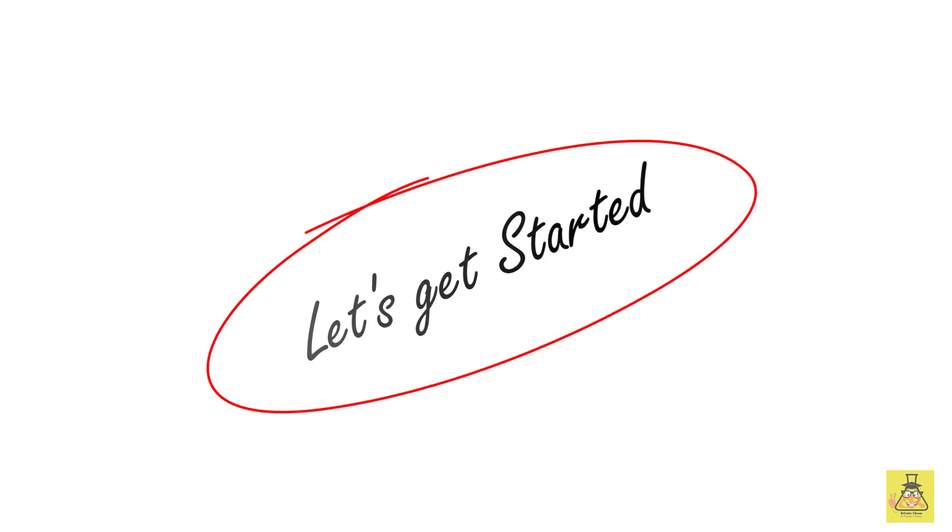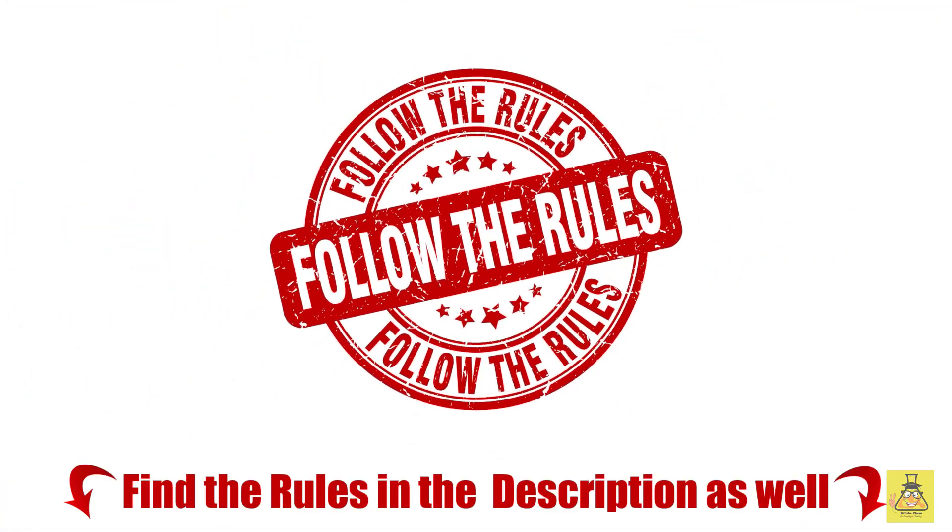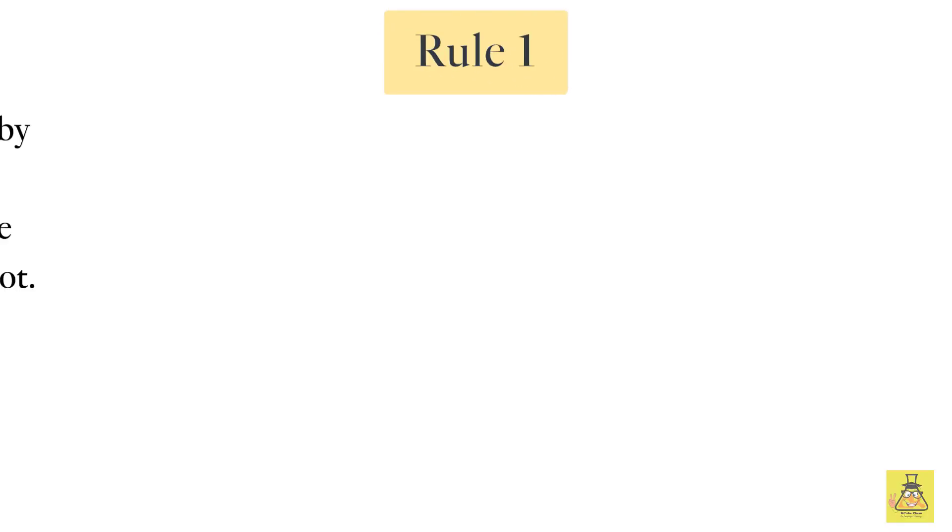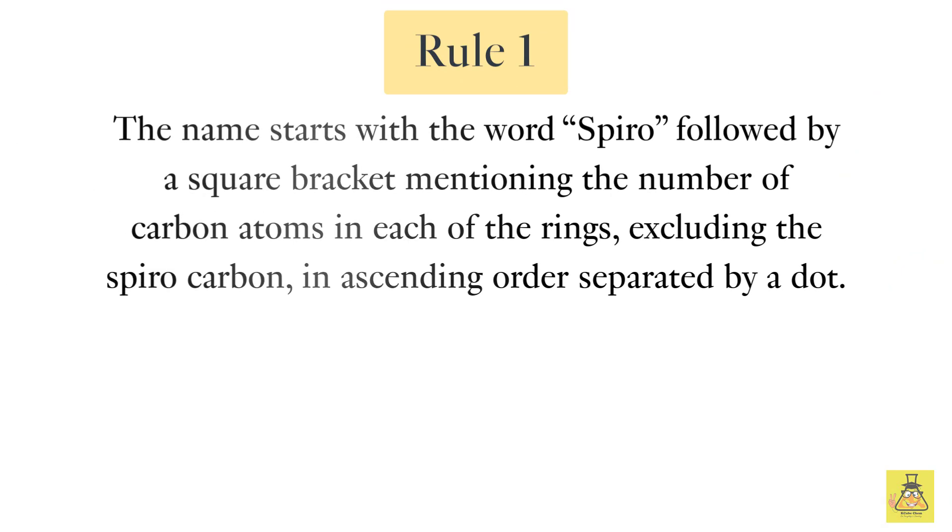As is the case with all IUPAC nomenclature, we have a set of rules which we have to follow to assign a name. Rule one: the name will start with the word spiro followed by a square bracket mentioning the number of carbon atoms in each ring, excluding the spiro carbon, in ascending order separated by a dot. To understand this rule, let's bring in a molecule. Here we see a three-member ring attached to a four-member ring. When we exclude the spiro atom, the smaller ring has two carbon atoms while the larger has three. Hence we will write spiro square bracket two dot three bracket close.